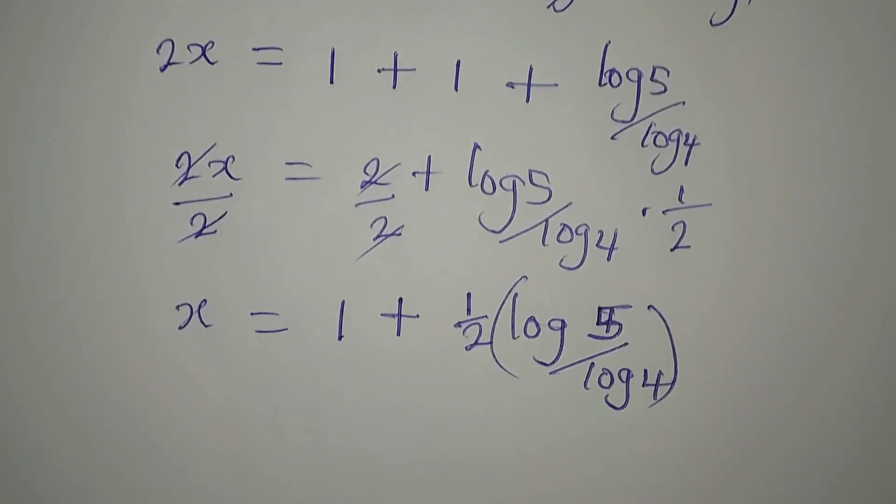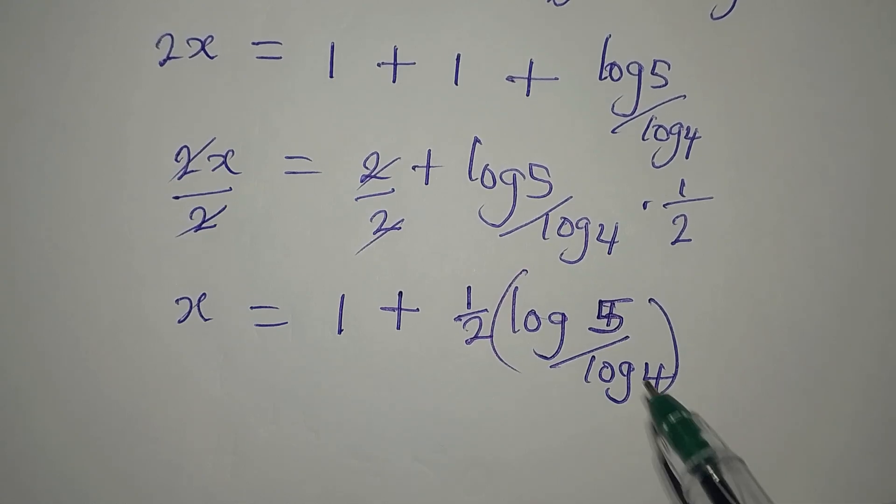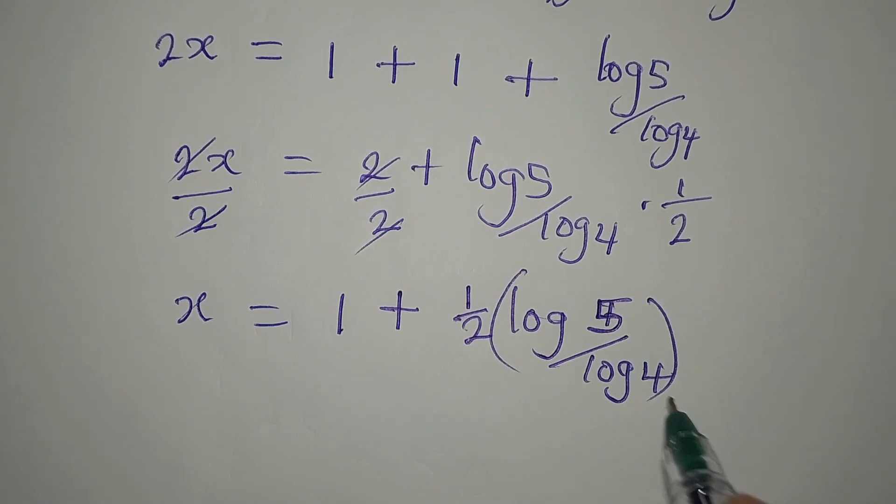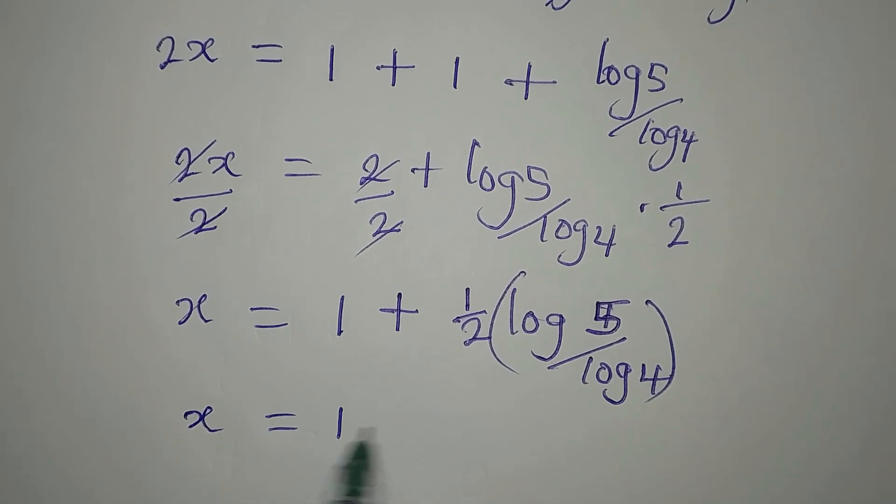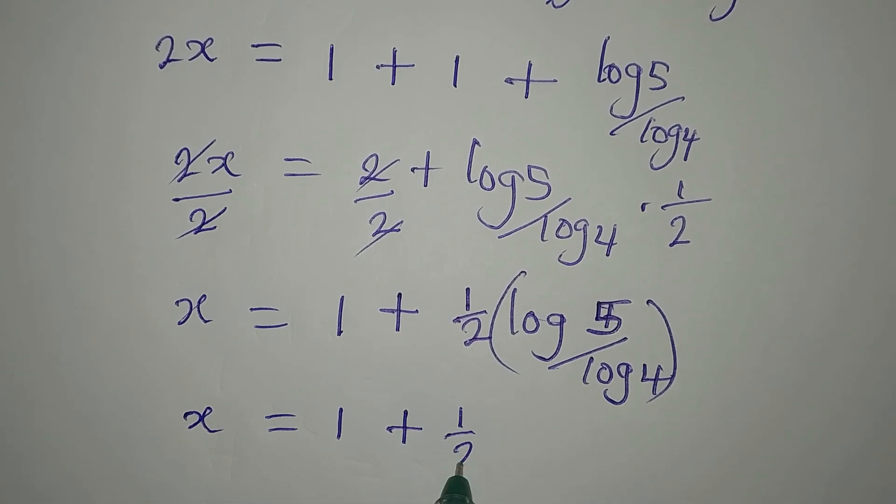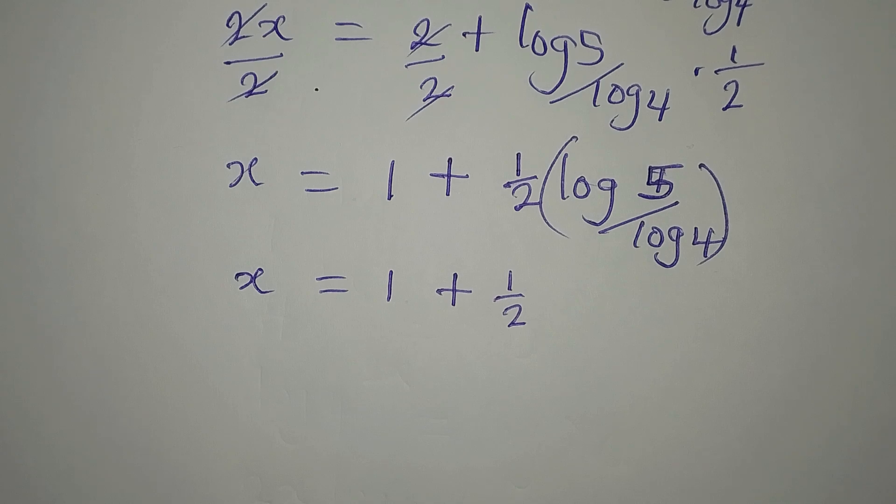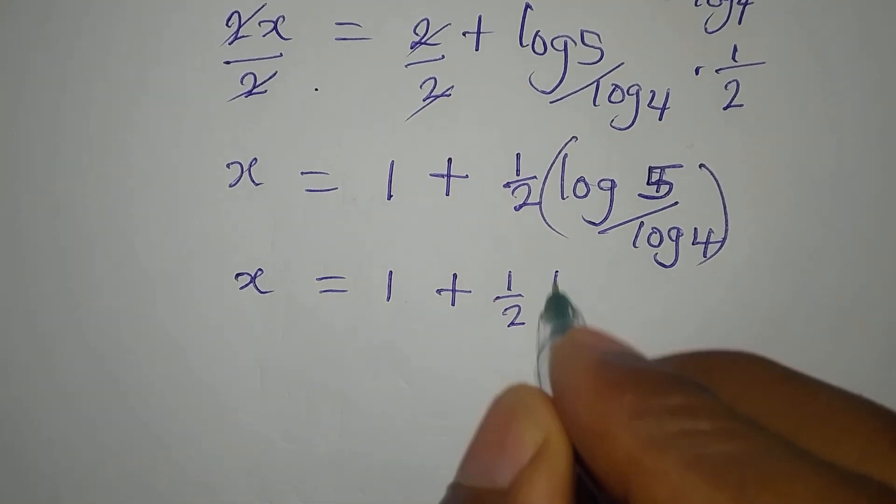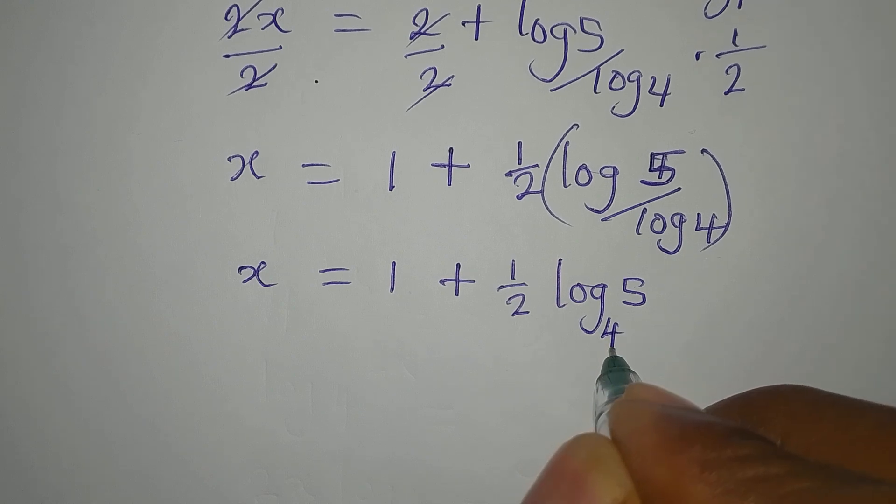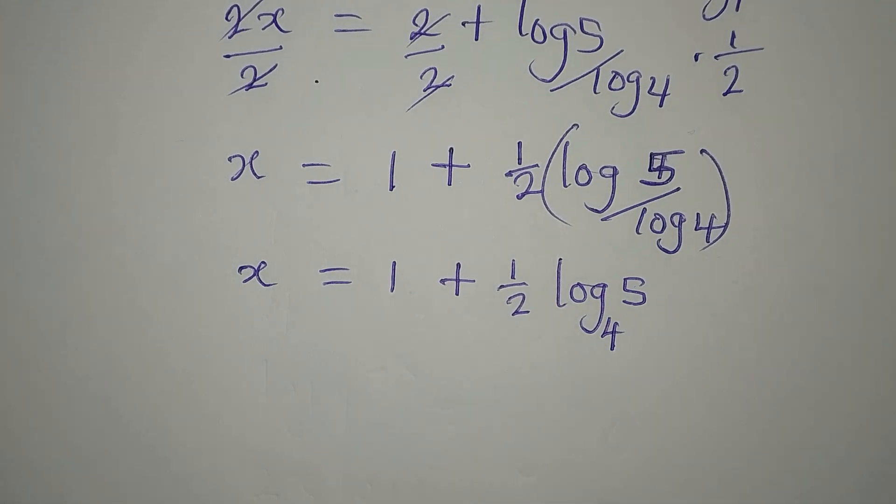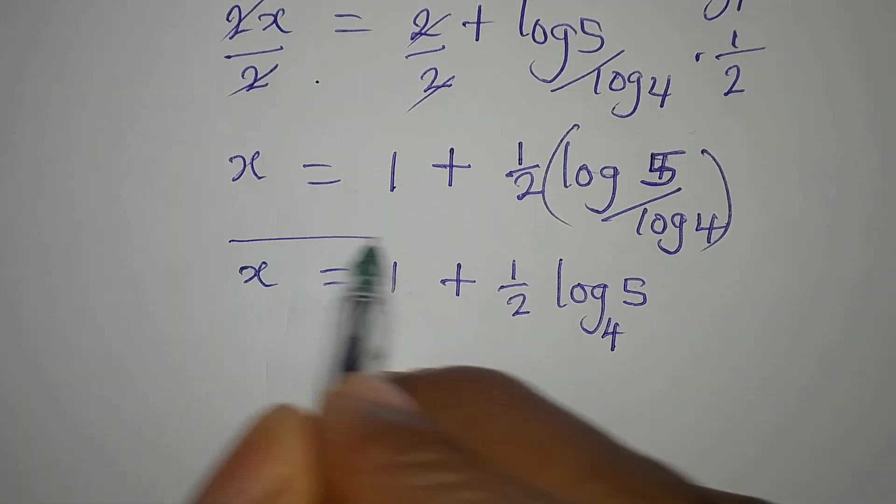But then, I can change the base of this so that 4 becomes the base of the numerator. So x will now be 1 plus 1 over 2 log 5 to base 4. So this is what we have as the value of x.